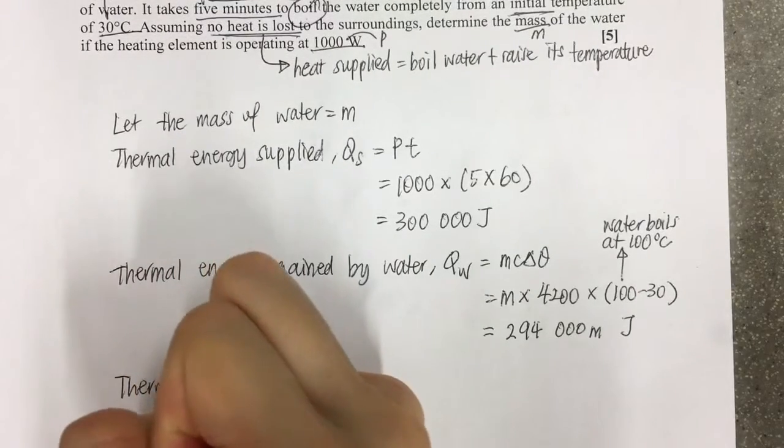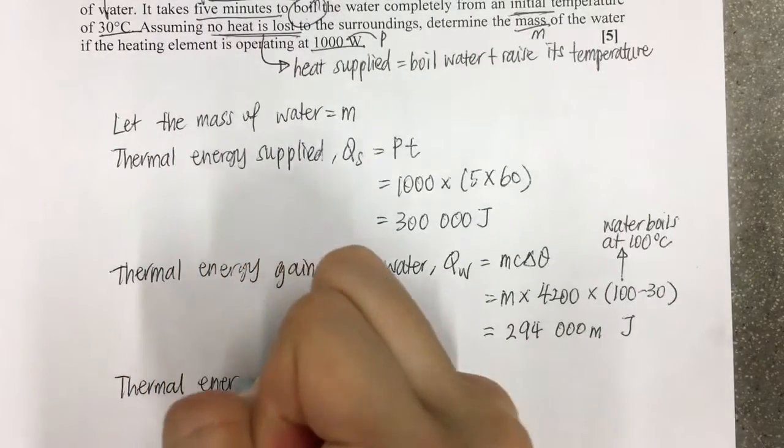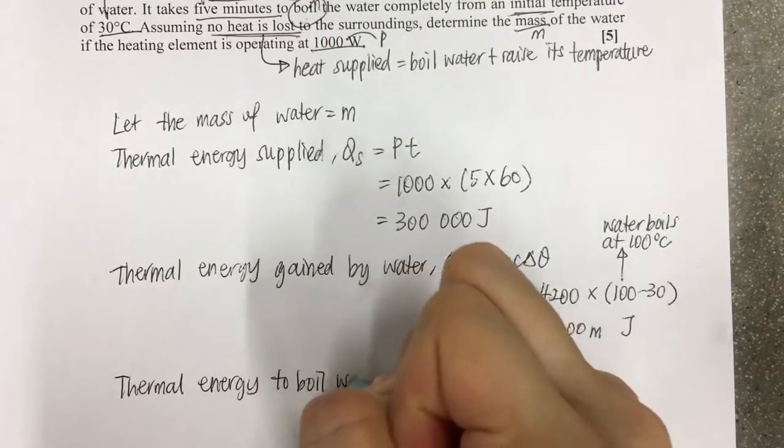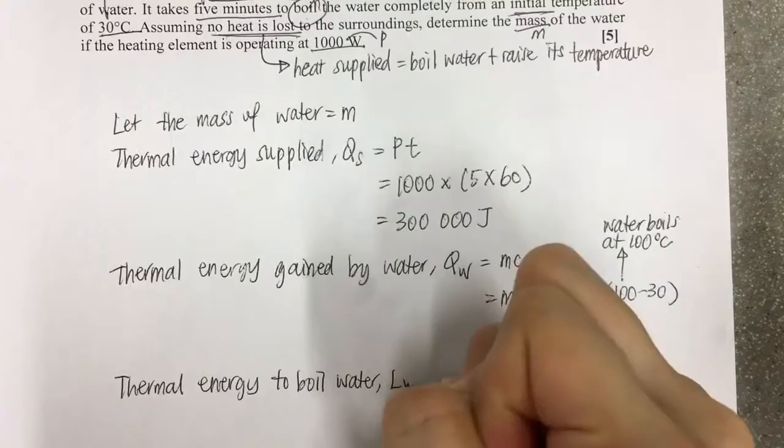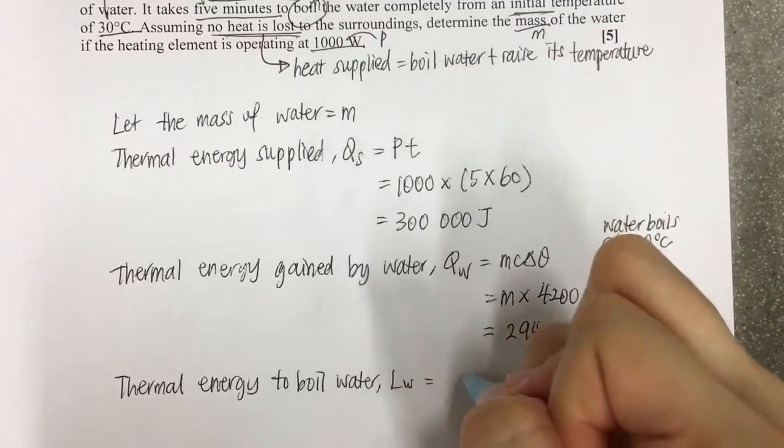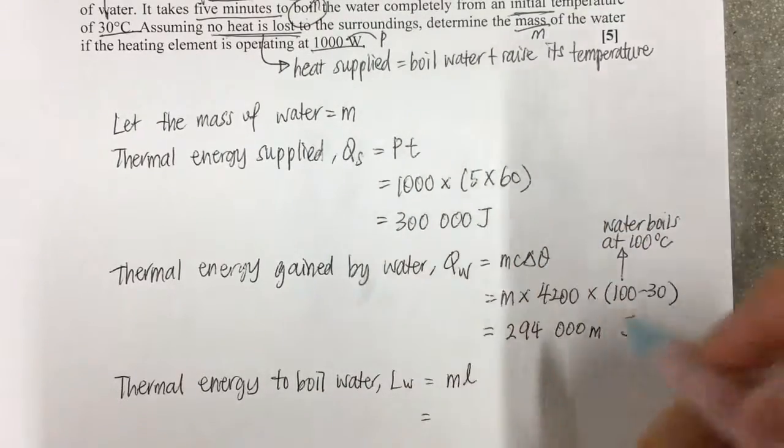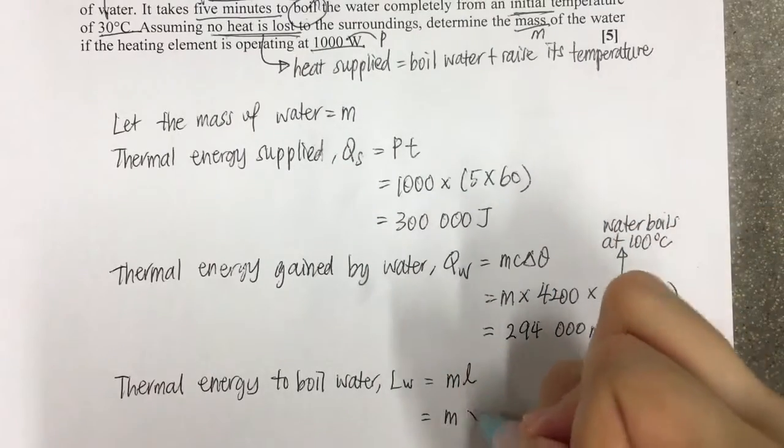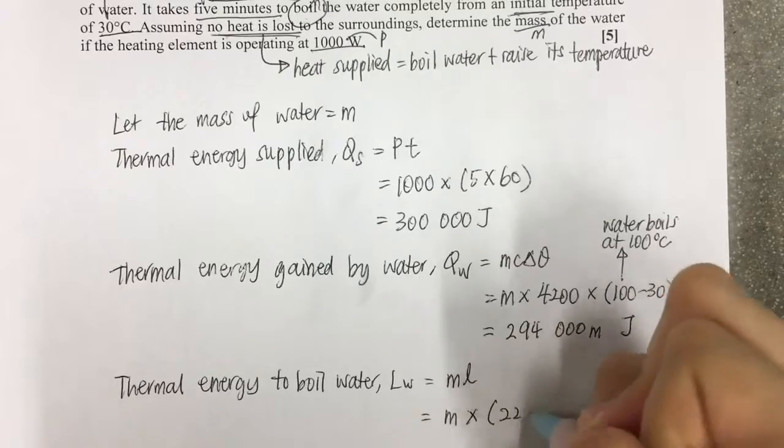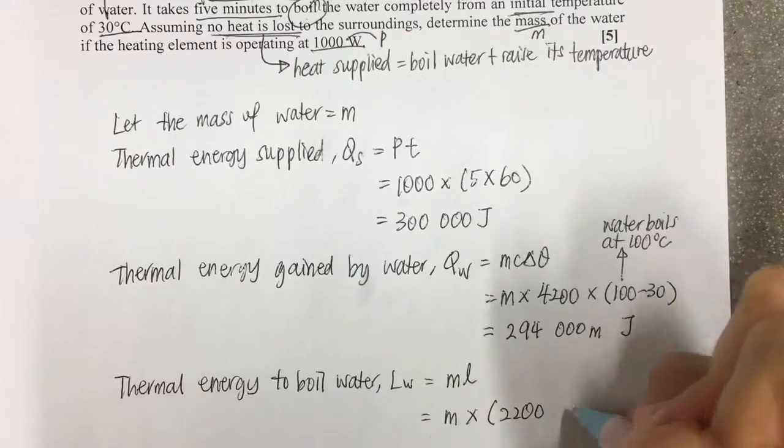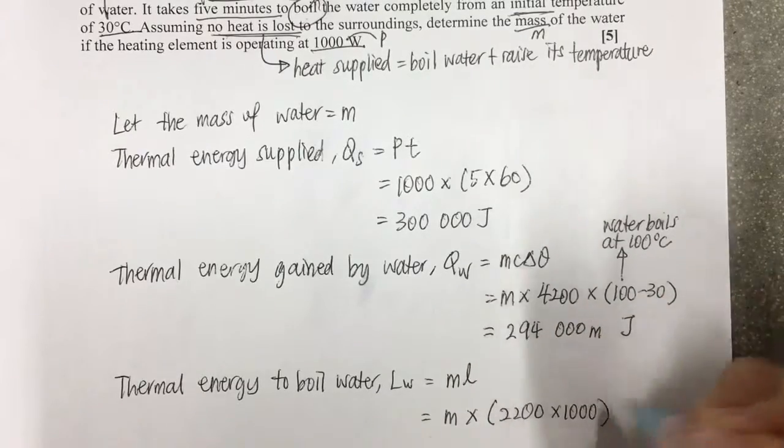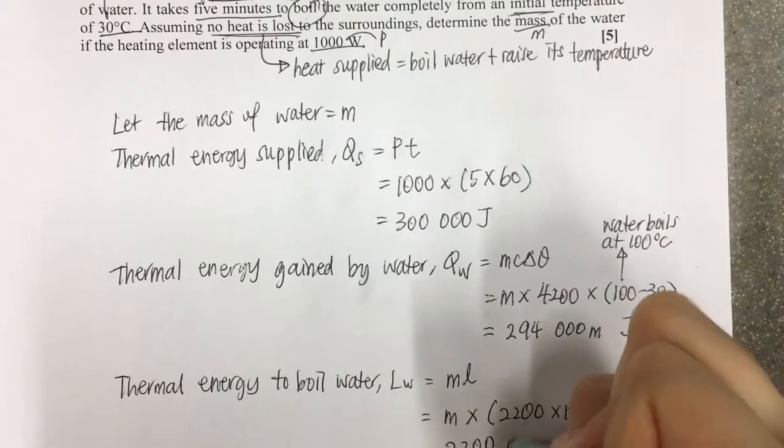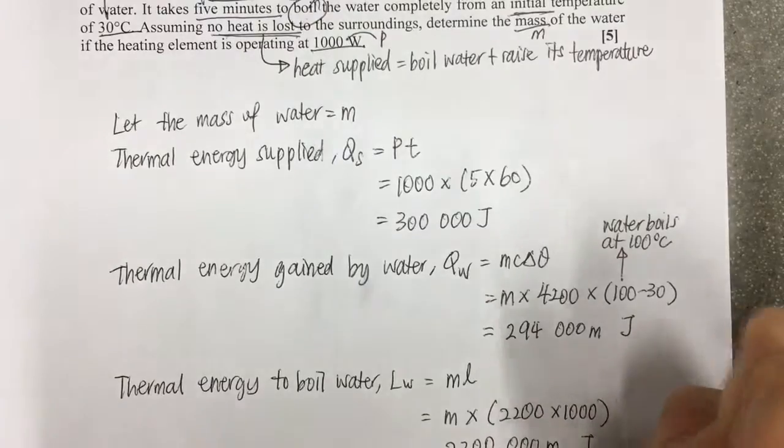You will get 294,000m joules. Next, thermal energy needed to boil the water—this is about boiling, so we need to use the latent heat formula. So m is unknown times 2200 times 1000, so you get 2,200,000m joules.